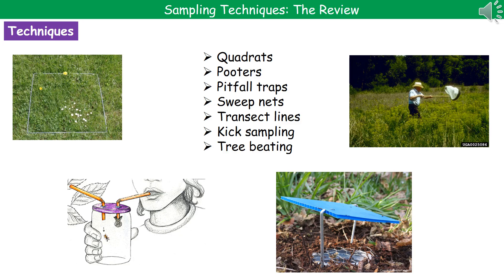The second technique is using a pooter, which is in the bottom left there. The pooter allows us to collect small insects. What you've got there are two straws — one with a little mesh covering, which is very important, and the other one without. You place the one without against the little bug you're trying to collect, place the straw with the mesh covering inside your mouth, and suck in — the little bug then ends up in your collection jar. It's obviously very important only to suck on the one with the mesh, otherwise you get a mouthful of bugs instead.